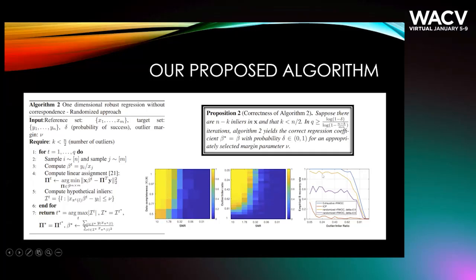In the right plot, I'm showing the accuracy of our proposed algorithm in the exhaustive case and two different settings of delta parameter, and finally an already existing ICP, which completely breaks down in this scenario where we have a lot of outliers.